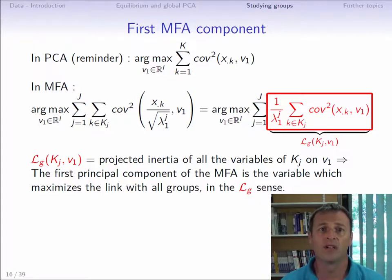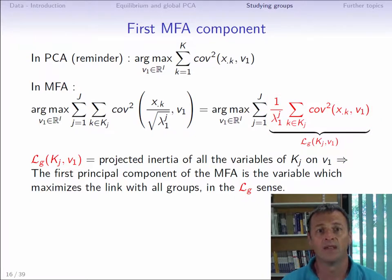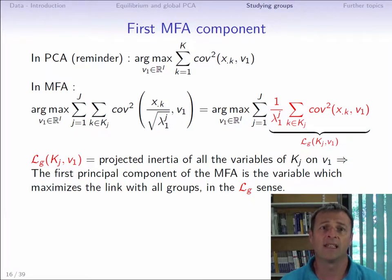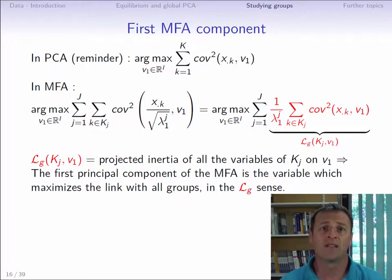Lg is a measure of the connection between a group of variables and a variable. There is another well-known measure of the relationship between a variable and a group of variables, known as the R-squared, which is used in regression. The interest in Lg is that it is based on the inertia and, in factor analysis, we always try to maximize inertia. The formula tells us that the first component of the MFA is the variable that maximizes the link with all the groups in the Lg sense.